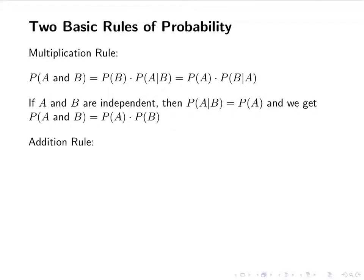The other rule is called the addition rule. It talks about the 'or' part of probability. The probability of A or B is equal to the probability of A plus the probability of B minus the probability of A and B. Because if A and B occur at the same time, we'd be double counting them, which is why we subtract it.